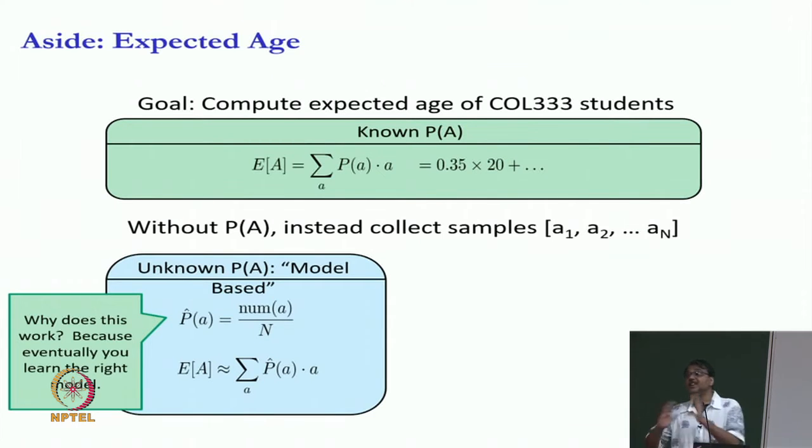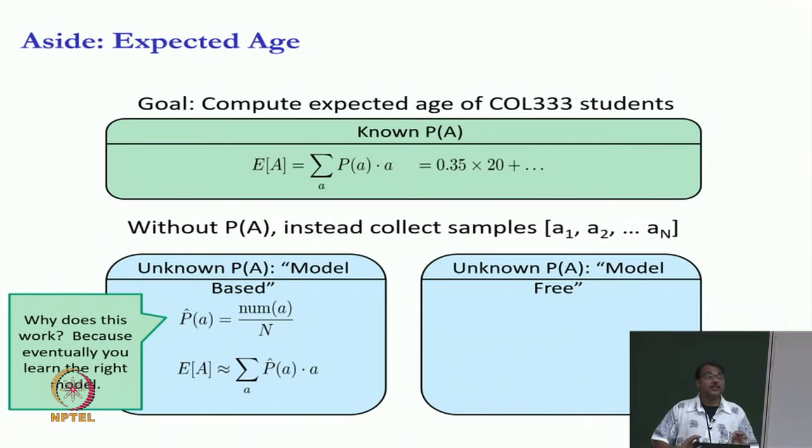This is what I am calling the model based computation of expectation. And this works because eventually you learn the right model, right? So in the limit of lot of samples, you finally learn the right model or as more and more samples come, your P hat becomes closer and closer to P and eventually your expectation becomes closer and closer to the original expectation. However, you can alternatively do a second thing.